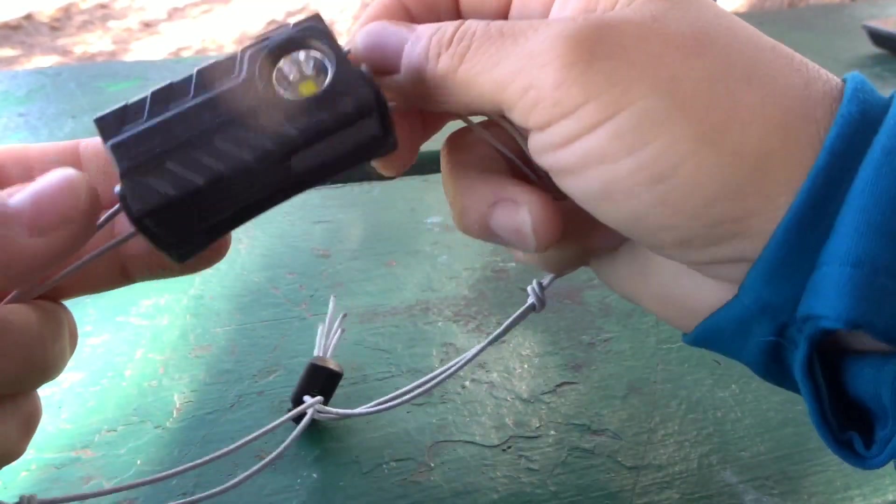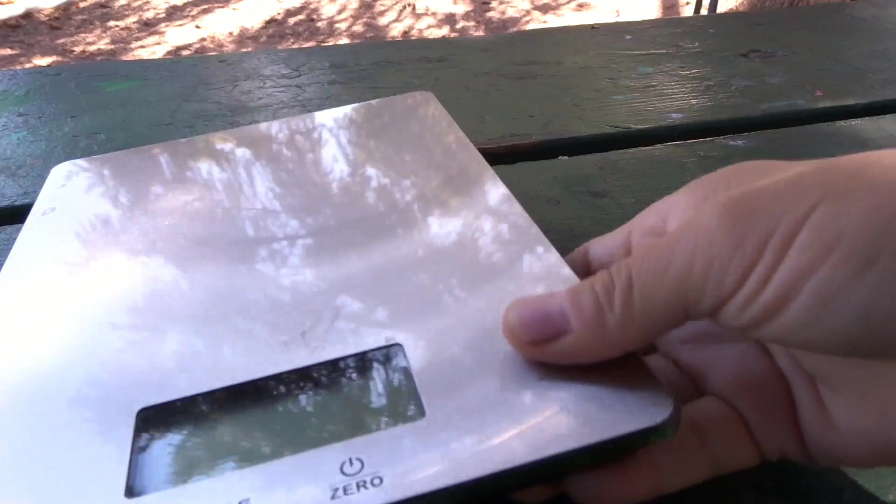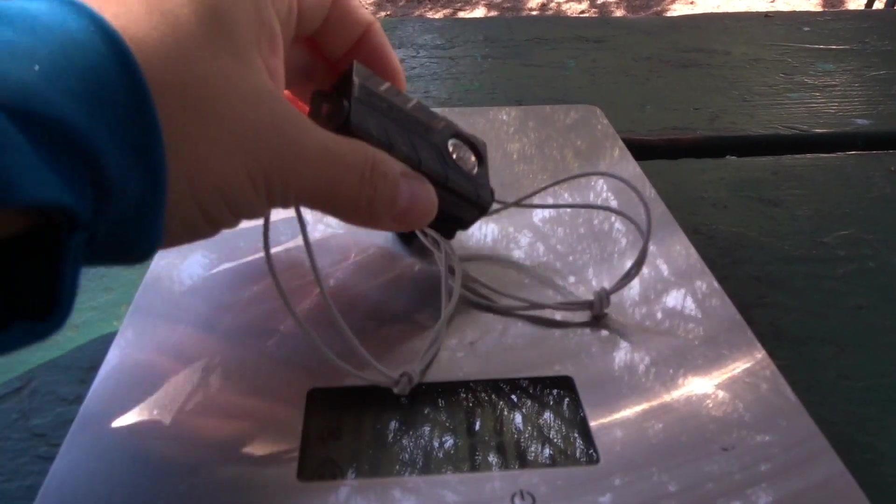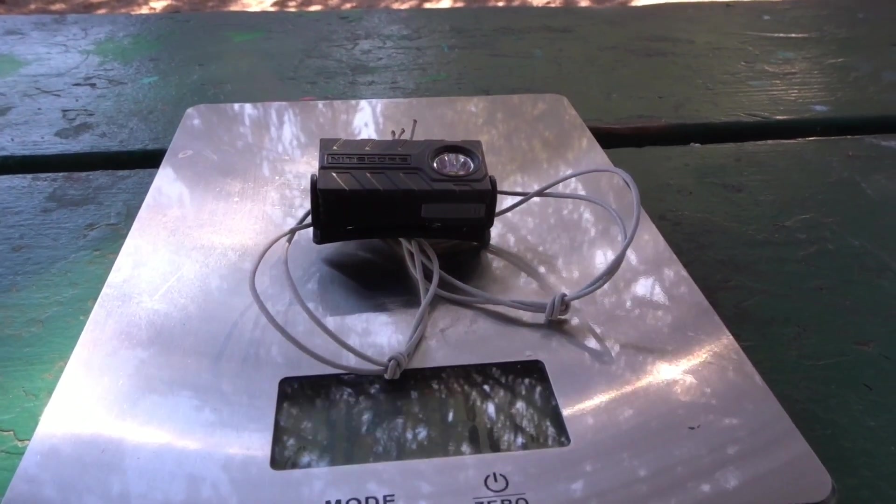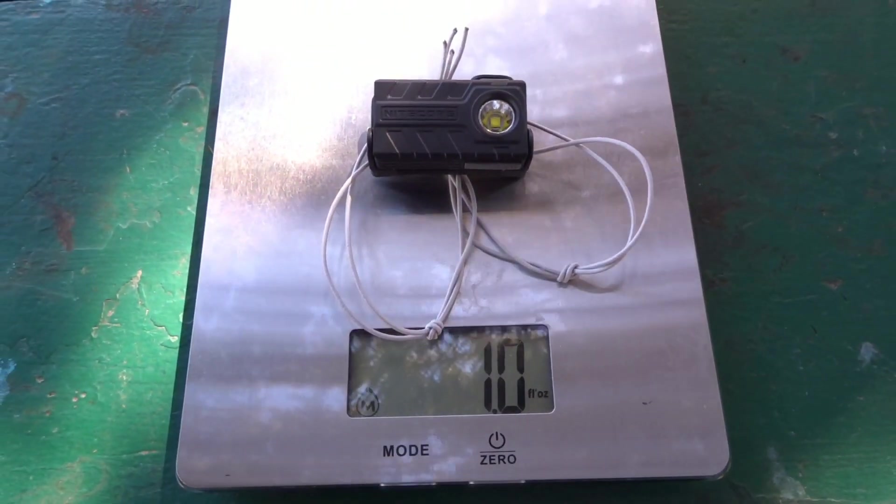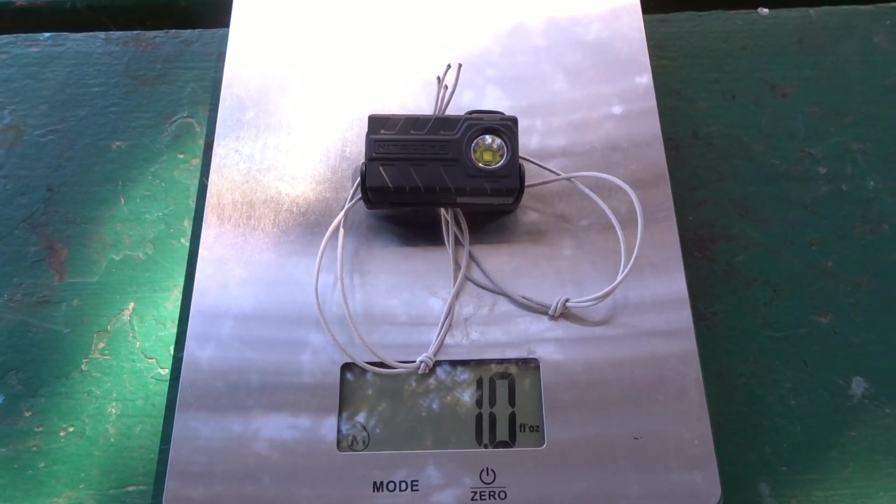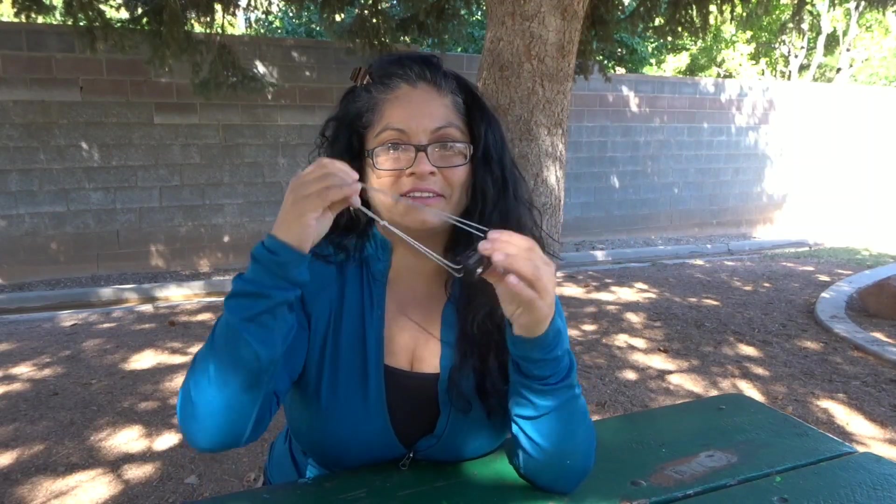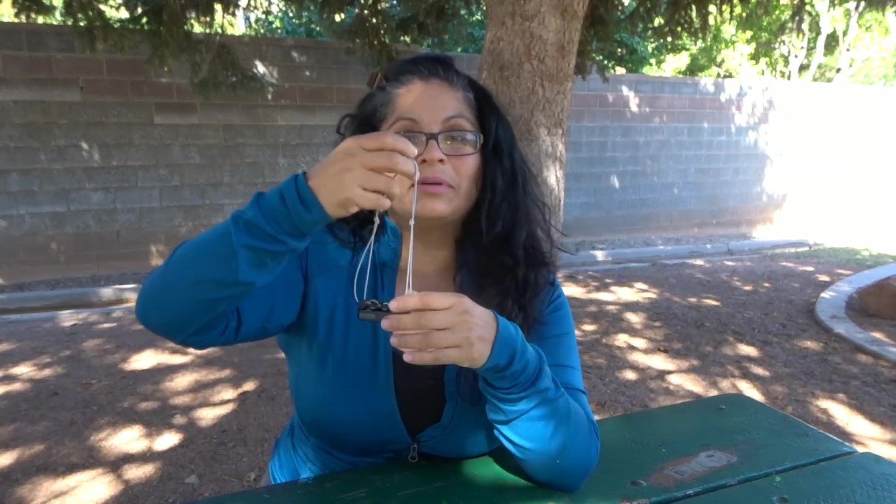There we go, and this is it. And I'm going to show you now how light it gets because this was two ounces. Okay, now it's exactly one ounce. Pretty cool! And now we got our ultralight headlamp.